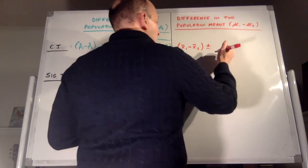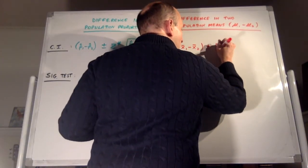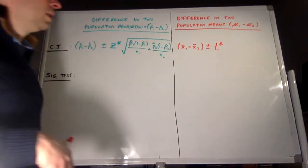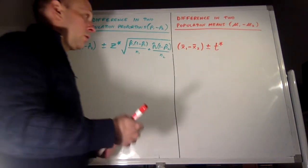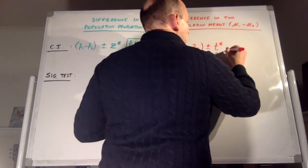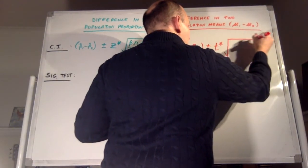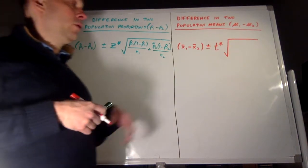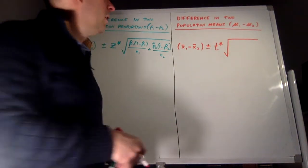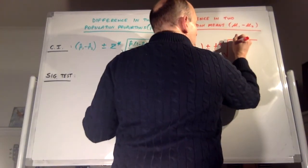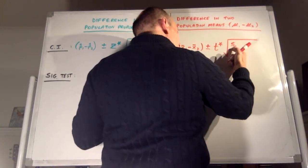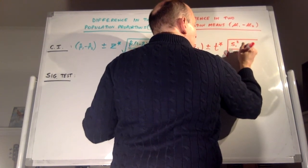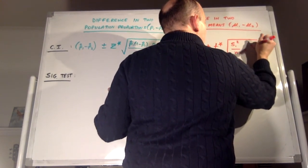The critical value here is going to be a t* value — t goes with x-bars. So if we're doing means, we're going to use a critical t. The standard error here, again, we can't get the standard deviation of this sampling distribution because we don't know the standard deviations of the two populations. So we use the standard deviations of the samples, s1 and s2: the square root of s1 squared over n1 plus s2 squared over n2.